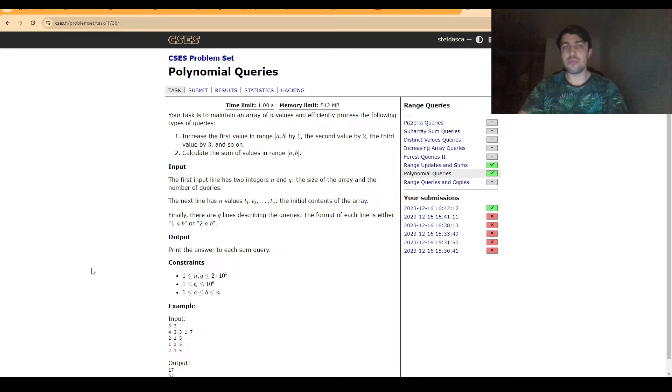We have to maintain an array of n values and process a bunch of queries. We either increase the values on a range a, b by 1, 2, 3 and so on, or calculate the sum of values in range a, b.